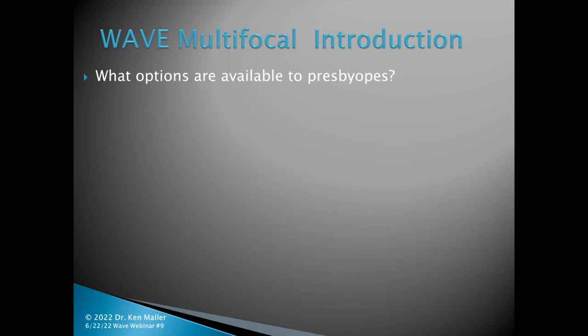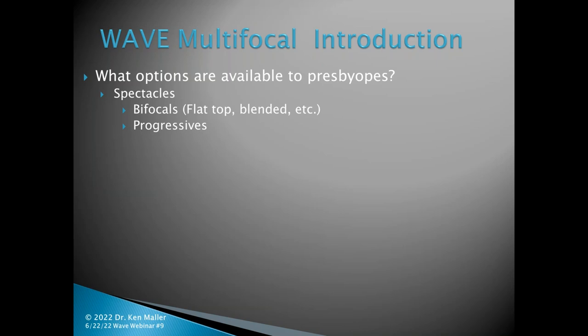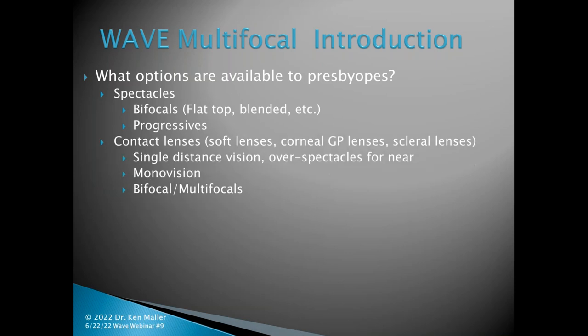What options are available to presbyopes currently? We've got spectacles — bifocals, flat top, blended, progressives, and digital spectacles. Moving on to contact lenses, we have soft lenses, corneal GP lenses, and scleral lenses. Regardless of which type of contact lens we're talking about, it all comes down to three choices: single vision distance with over-spectacles for near, monovision, or bifocal and multifocal contact lenses. There are also some combinations of that.